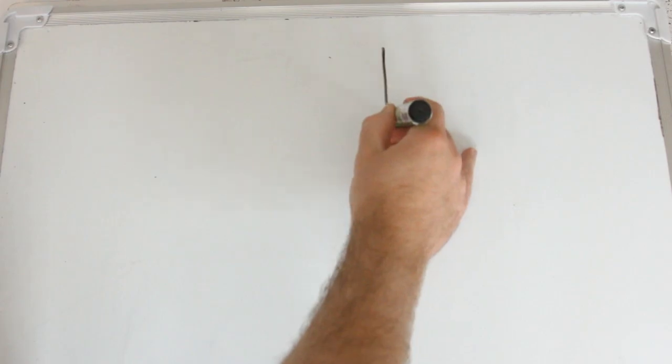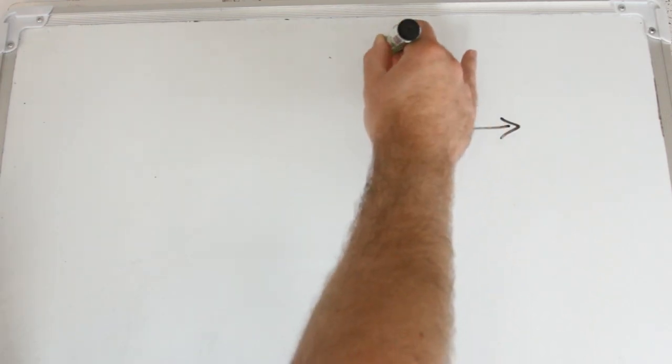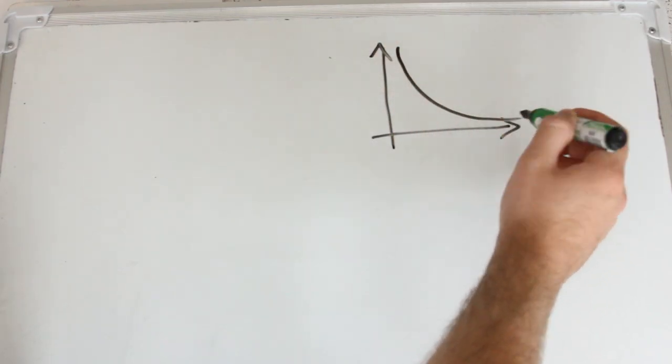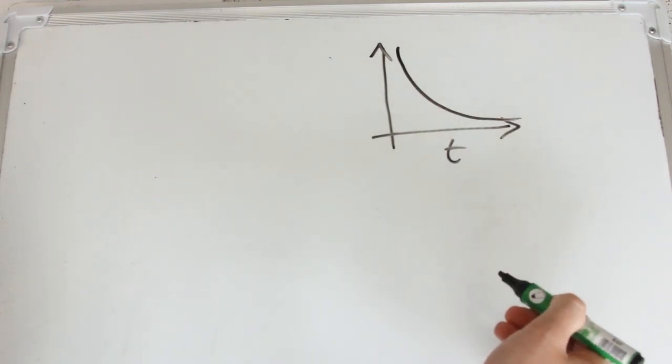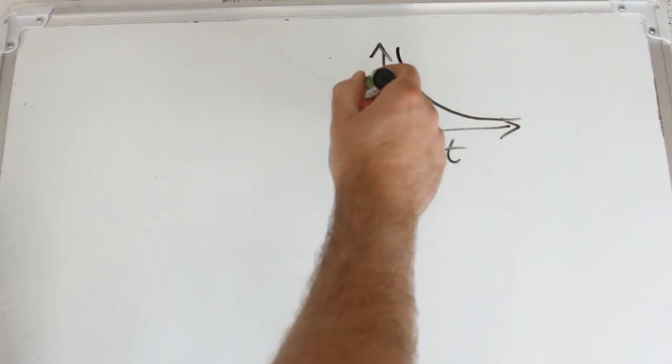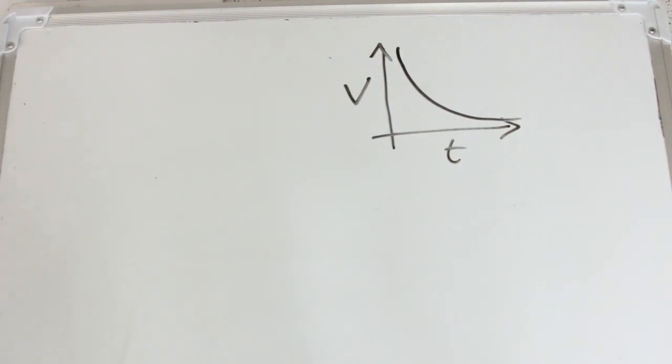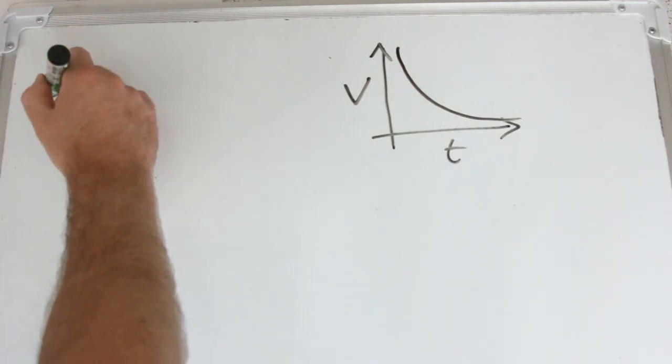So exponential decay always follows a curve that looks something like this, with time usually being on the x-axis and some quantity which is falling at an exponential rate. In the capacitors example we're going to use, it's going to be a voltage and they follow equations that look like this.